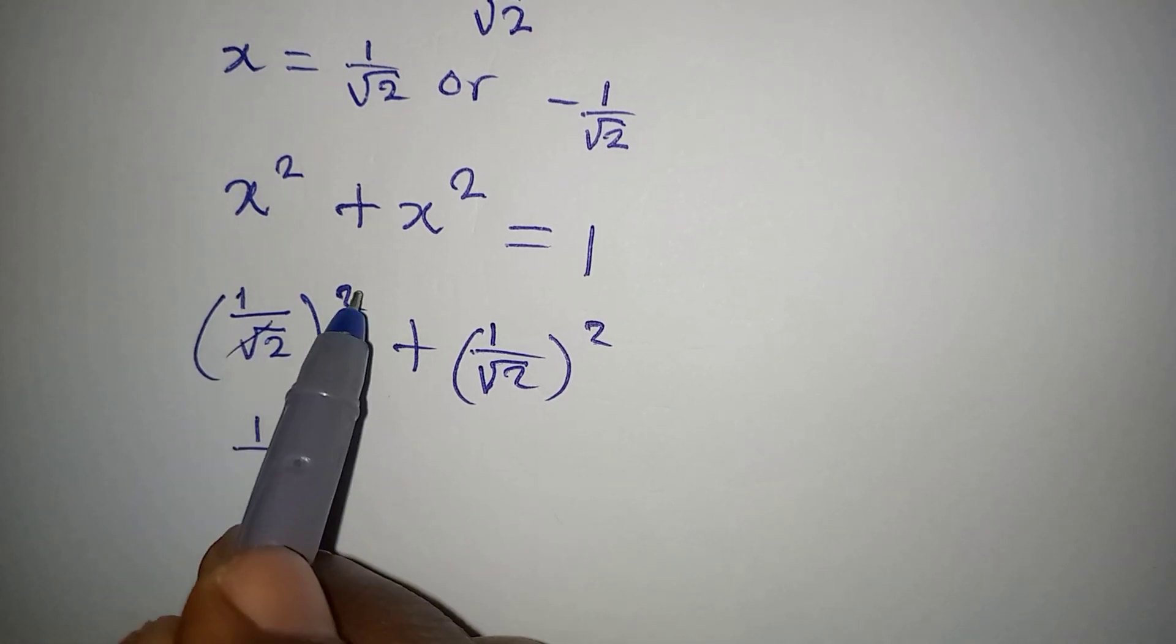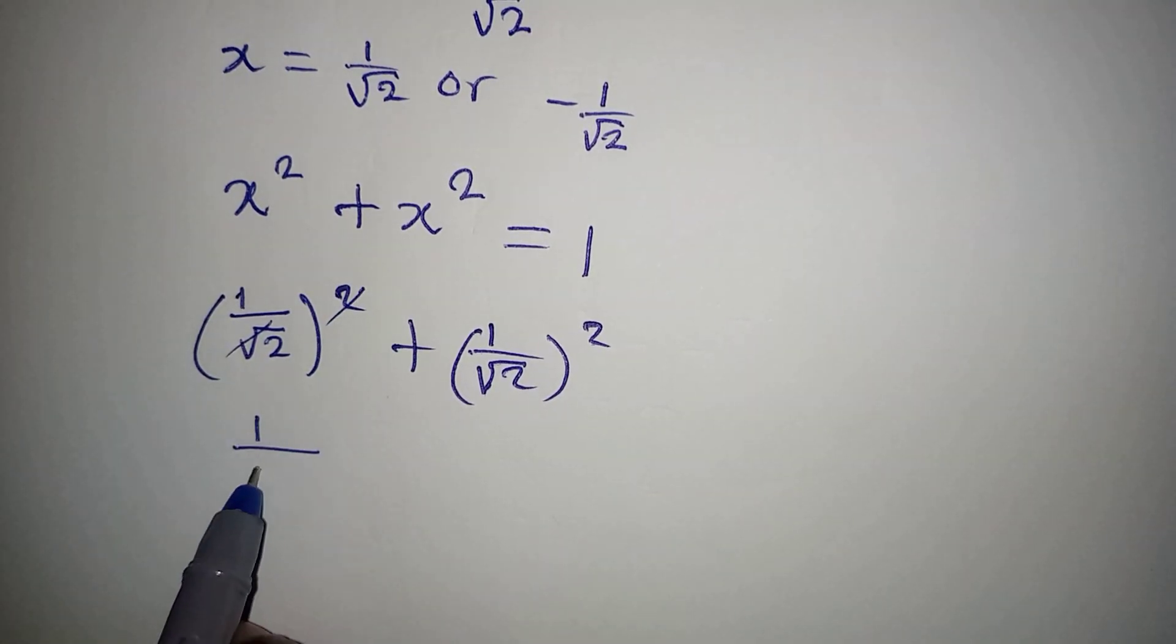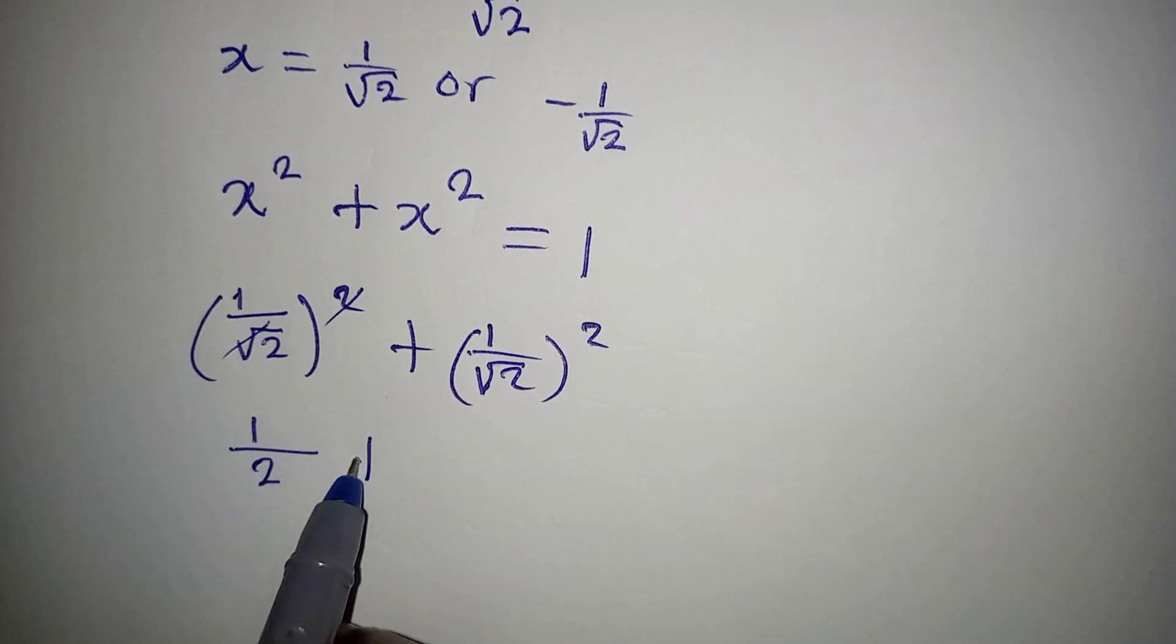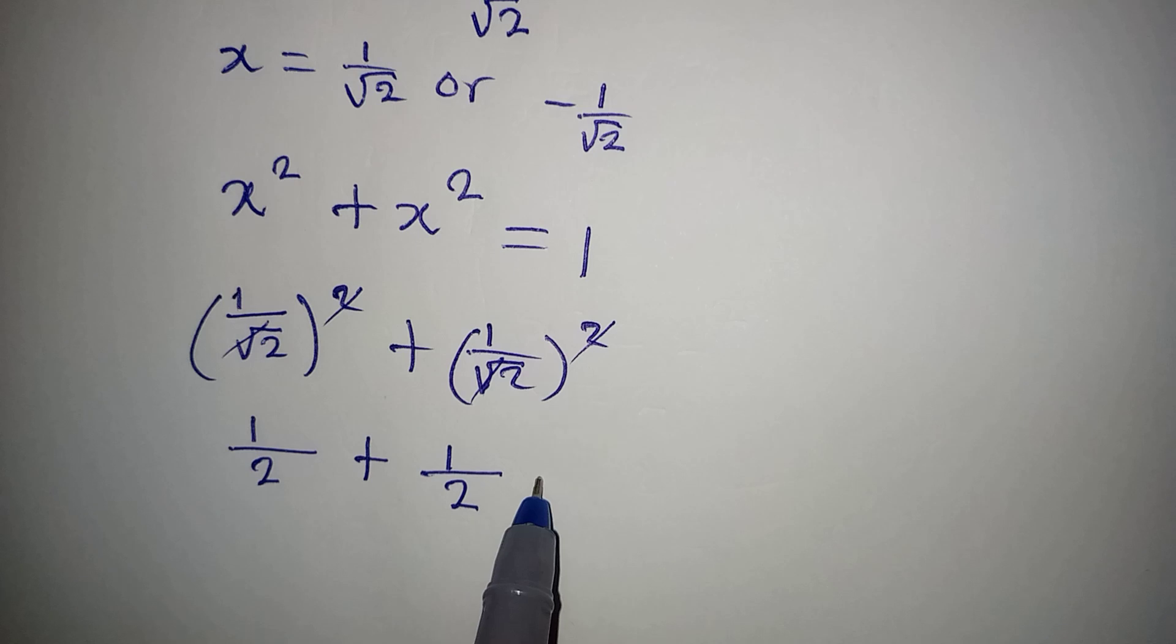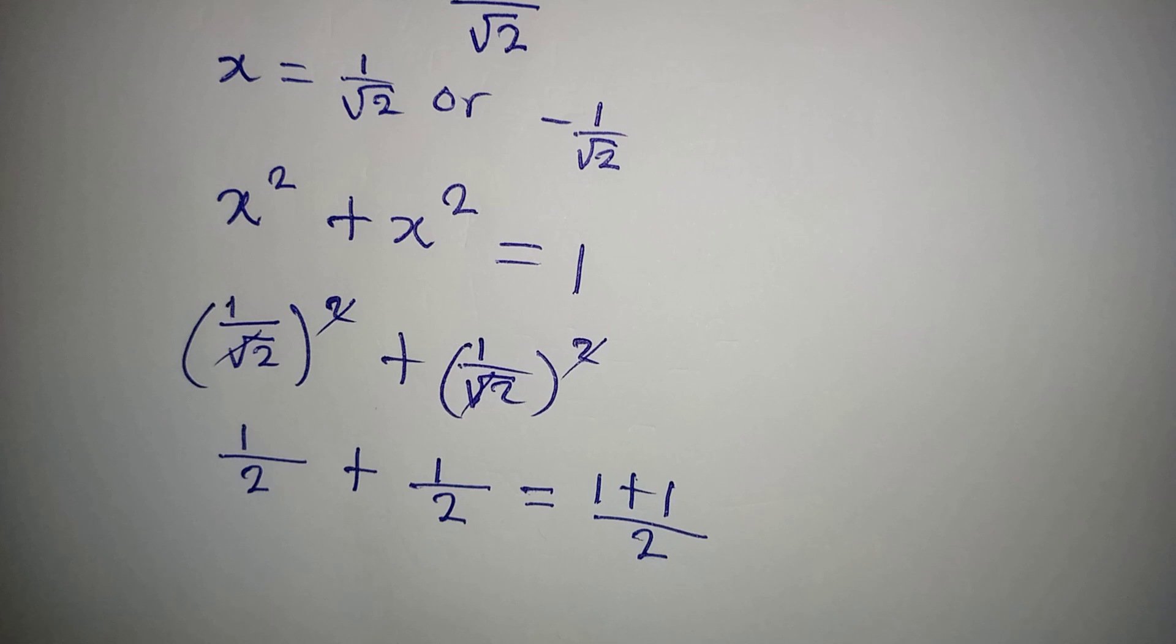Then plus 1 squared will give 1 over, this will go with this and I have this. Now this implies that we have 2 over... 1 plus 1, the LCM is 2, right?